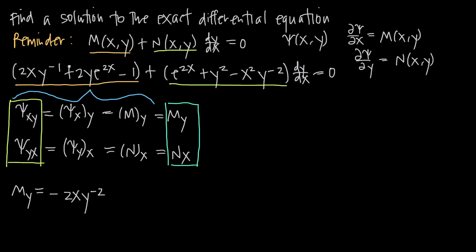The partial derivative of M with respect to y is the partial derivative of that function with respect to y, which gives us negative 2xy to the negative 2. Remember, we're holding x as a constant, so we bring the negative 1 exponent out front: negative 1 times 2 gives negative 2, x stays as a constant, and we subtract 1 from the exponent giving negative 2. The e^(2x) is just a constant, so the derivative of 2y is just 2, leaving 2e^(2x), and the derivative of negative 1 is 0.